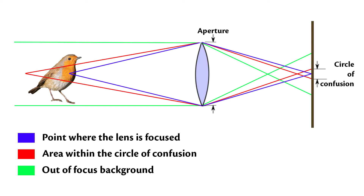When the circular spot is sufficiently small, it's visually indistinguishable from a point and it appears to be in focus. The diameter of the largest circle that is indistinguishable from a point is known as the acceptable circle of confusion, or informally simply as the circle of confusion. Points that produce a blur spot smaller than this acceptable circle of confusion are considered acceptably sharp.